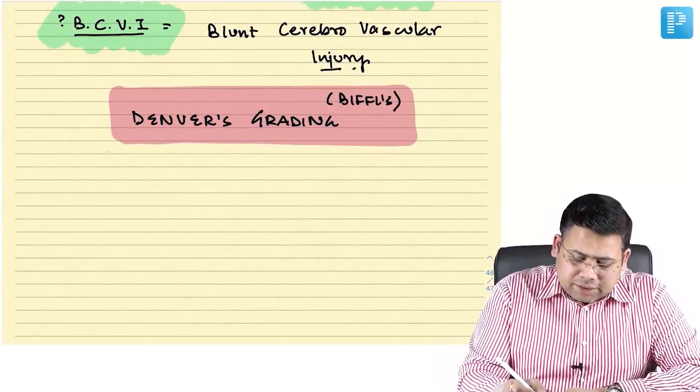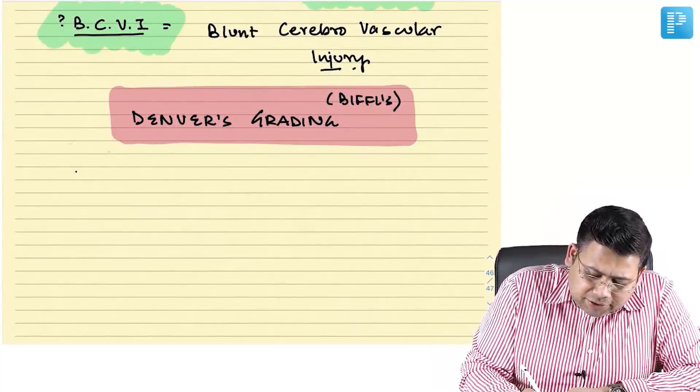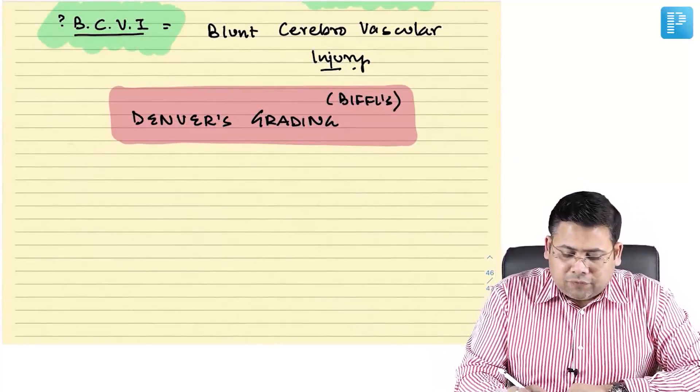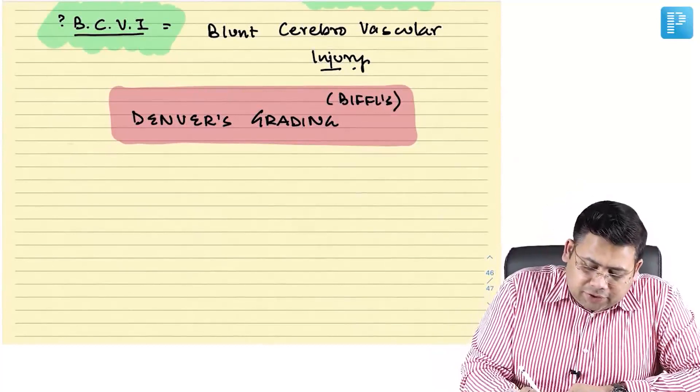Denver's grading has five grades: Grade 1 through Grade 5.